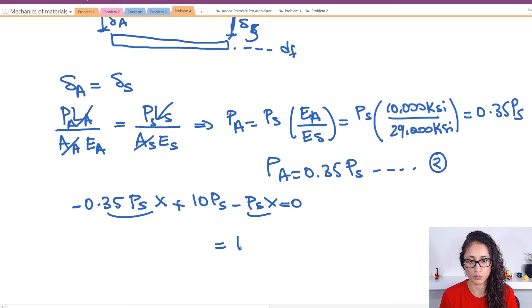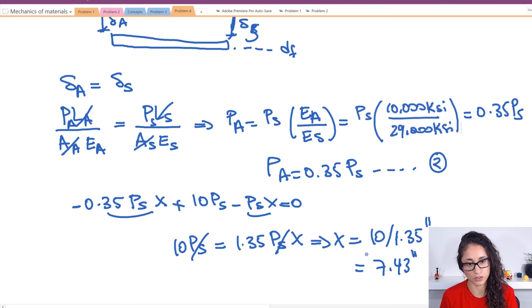So I have 1.35 PS times X and then this side I'm gonna have 10 PS. PS with PS cancels. So now I have X is equal to 10 divided by 1.35 inches and this is equal to 7.43 inches. So this is our X and so the answer is going to be C.